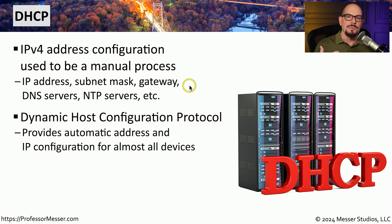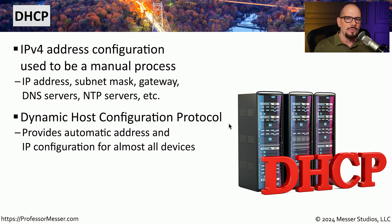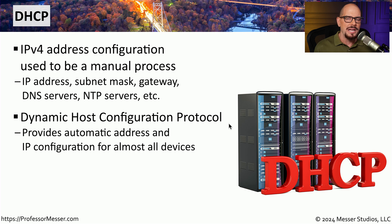The way we receive this automated IP addressing is through a protocol known as DHCP, or Dynamic Host Configuration Protocol. When we plug into a wired ethernet network or a wireless network and we're automatically able to communicate out to the internet, it's because we've received all of our IP configuration settings via DHCP.